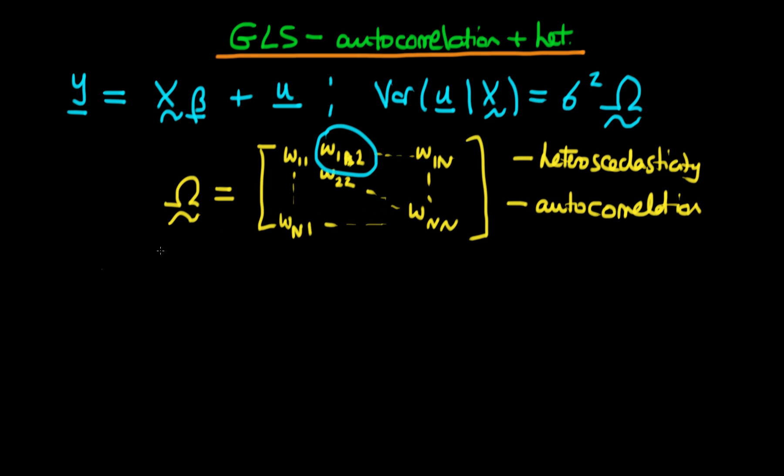We're going to proceed exactly as we did before. We're going to assume that there is some sort of transformation P, which we're going to apply to both sides of our original equation. So P times y equals P times X times beta plus P times u.